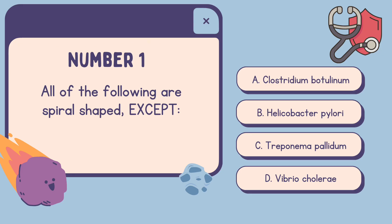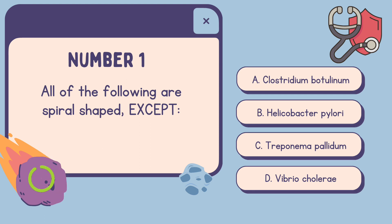Number one: All of the following are spiral-shaped except — A. Clostridium botulinum, B. Helicobacter pylori, C. Treponema pallidum, or D. Vibrio cholerae. The correct answer is A. Clostridium botulinum.